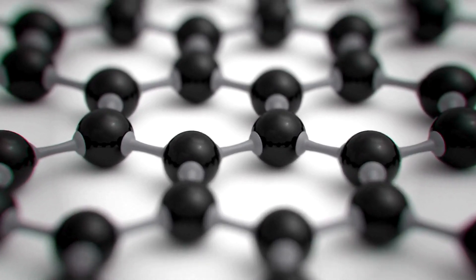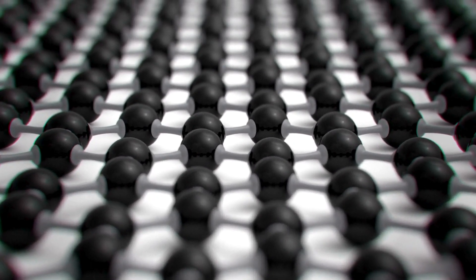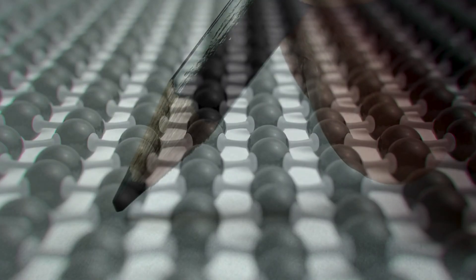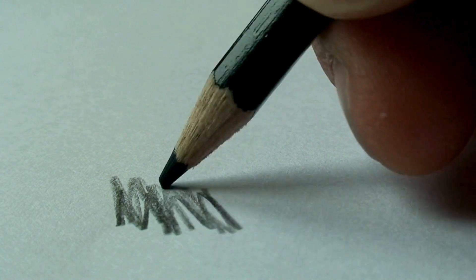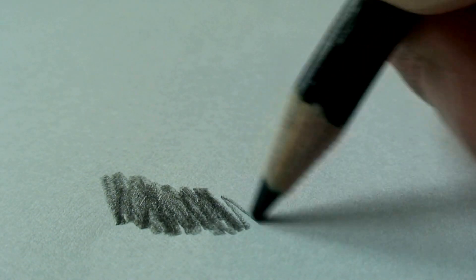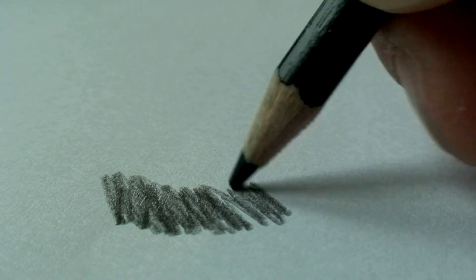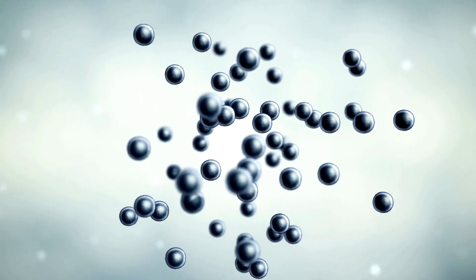Basically, it's the superstar of the nanomaterial world. Now, graphene oxide is a derivative of graphene. It's made by oxidizing graphite, which is the same material you find in your pencil lead. Graphene oxide has a layered structure with oxygen-containing functional groups attached to the carbon lattice. This makes it water-soluble and easier to process than pristine graphene.